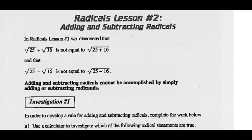In radicals, less than one, we discover that radical 25 plus radical 16 is not equal to the square root of 25 plus 16. And the same is true for subtraction — radical 25 minus radical 16 does not equal the square root of 25 minus 16. So adding and subtracting radicals cannot be accomplished by simply adding and subtracting the radicands.